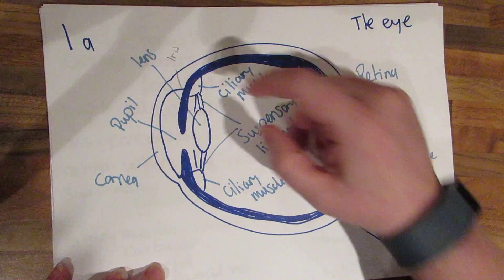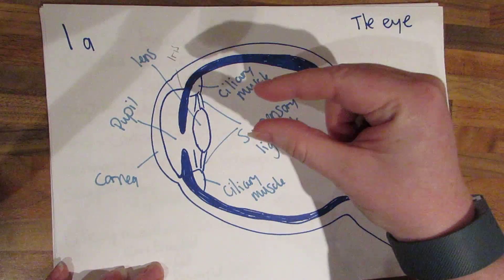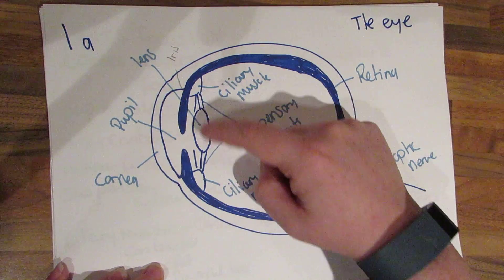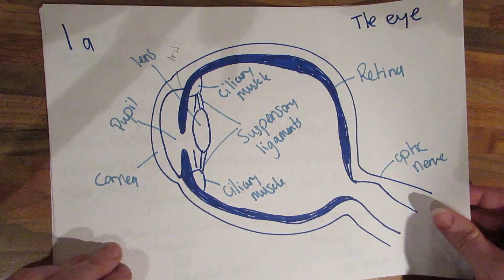The iris here, this is the coloured bit. The lens that changes shape. The ciliary muscles on either side which connect the suspensory ligaments to the eye.